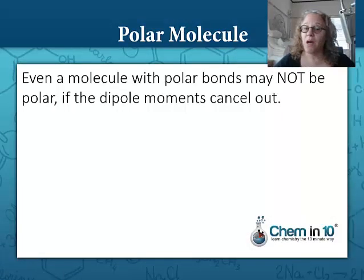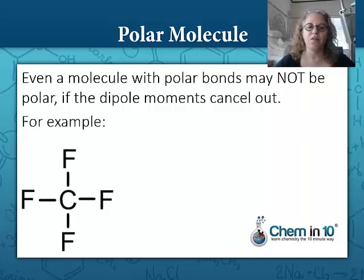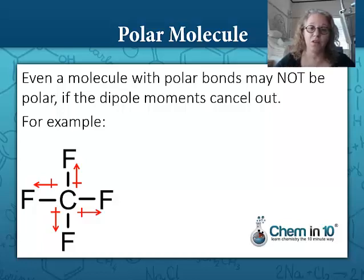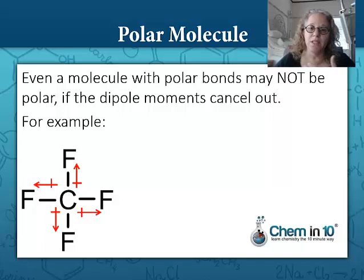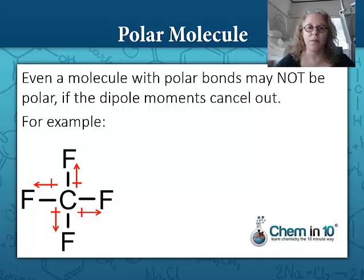Even a molecule with polar bonds may not be polar if the dipole moments cancel out. For example, here we have carbon tetrafluoride. Each of these bonds is polar — fluorine is the most electronegative atom, so the electron density spends more time around the fluorines than the carbon in the middle, leaving the carbon relatively positive. But because the dipole moments cancel out and it's a symmetrical molecule, the molecule as a whole is not polar. It's like a tug of war that has equal opponents on each side — the dipole moments cancel out.